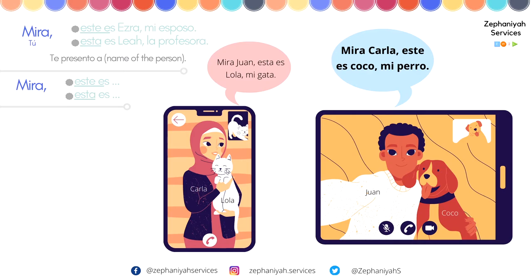Let's see another example. We have Carla and her cat Lola, and Juan with his dog Coco. Juan says to Carla: 'Mira, Carla, este es Coco, mi perro.' And Carla says: 'Mira, Juan, esta es Lola, mi gata.' You see? 'Esta es mi gata' — feminine singular — and 'este es mi perro' — masculine singular. 'Este es' is masculine singular and 'esta es' is feminine singular.